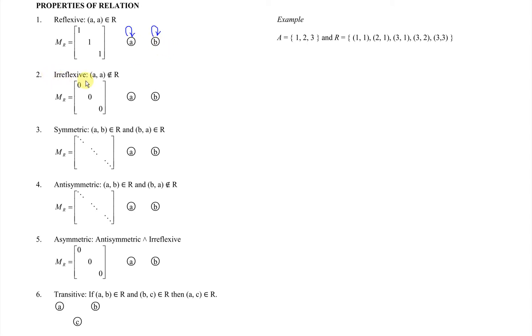For irreflexive, it should be the other way, where all the diagonal entries equal to 0, and we couldn't find any looping for the vertices.